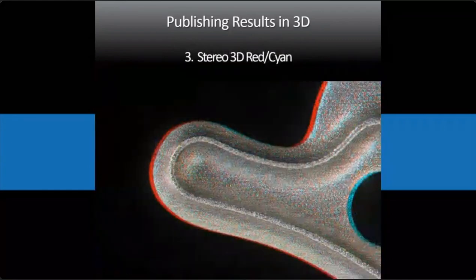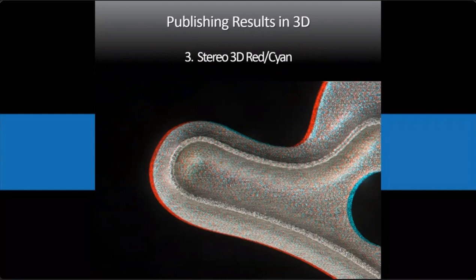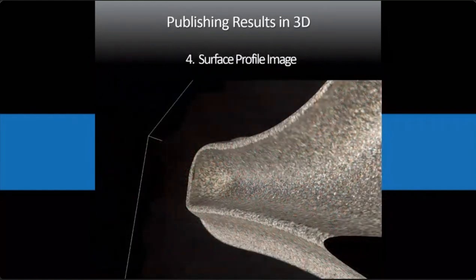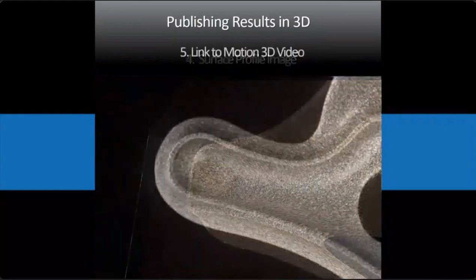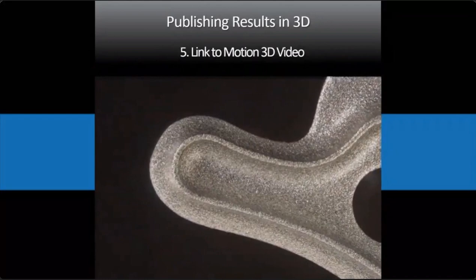If you put on your 3D glasses with the red on your left eye, you'll be able to see this in stereo. It shows you how powerful the human brain is — it really allows you to quickly understand the specimen in 3D. You can also do a surface profile, which can be turned in any direction with a click of the mouse, viewing the surface from pretty much any angle.